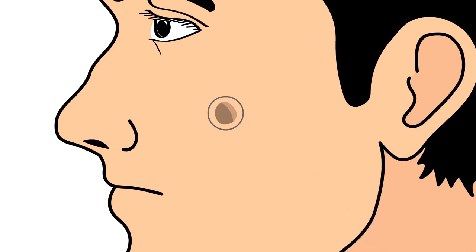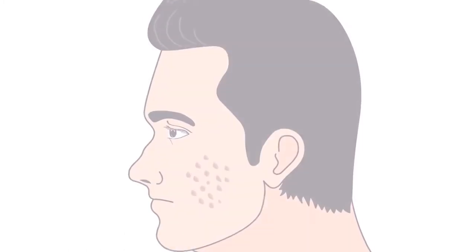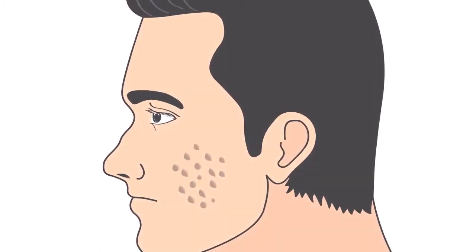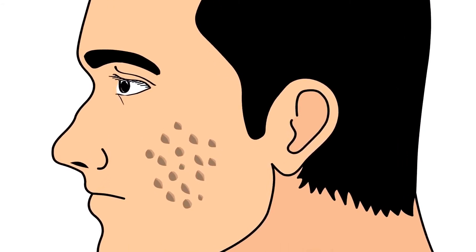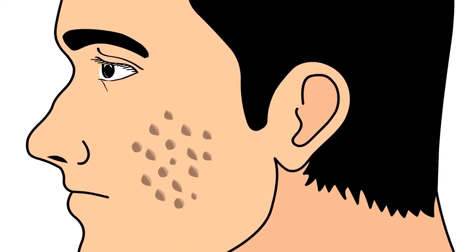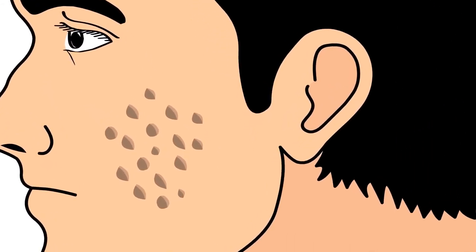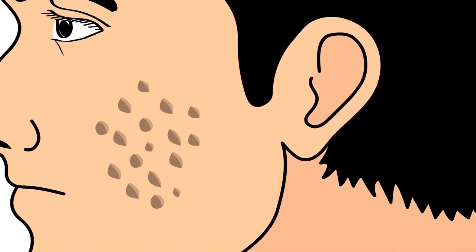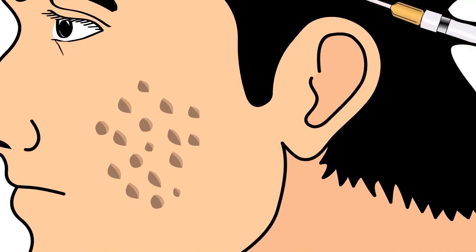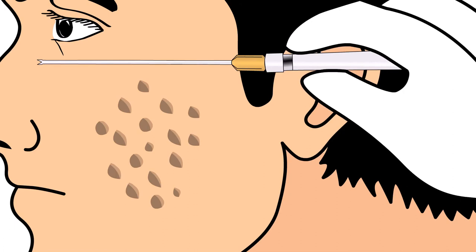This usually gives only moderate results and is limited to only small areas of acne scar. When it comes to larger areas of acne scar, a more aggressive form of subcision is performed. A larger area of local anesthesia is required, and a larger, longer, V-shaped, undermining, specialized needle is required.